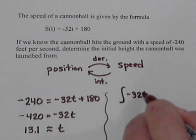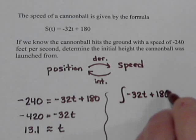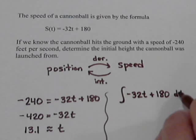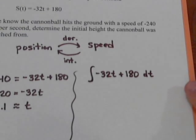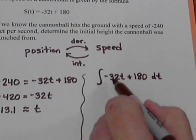So let's take the integral of the speed. Negative 32t plus 180, and this is the derivative with respect to t. So how do we do the integral?